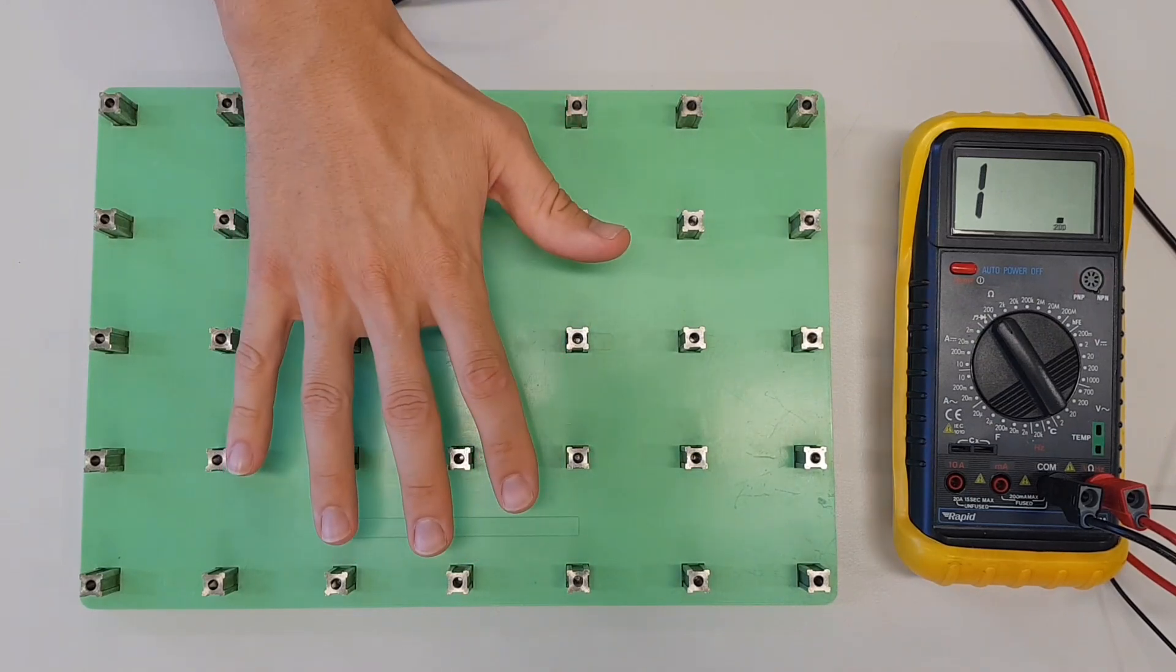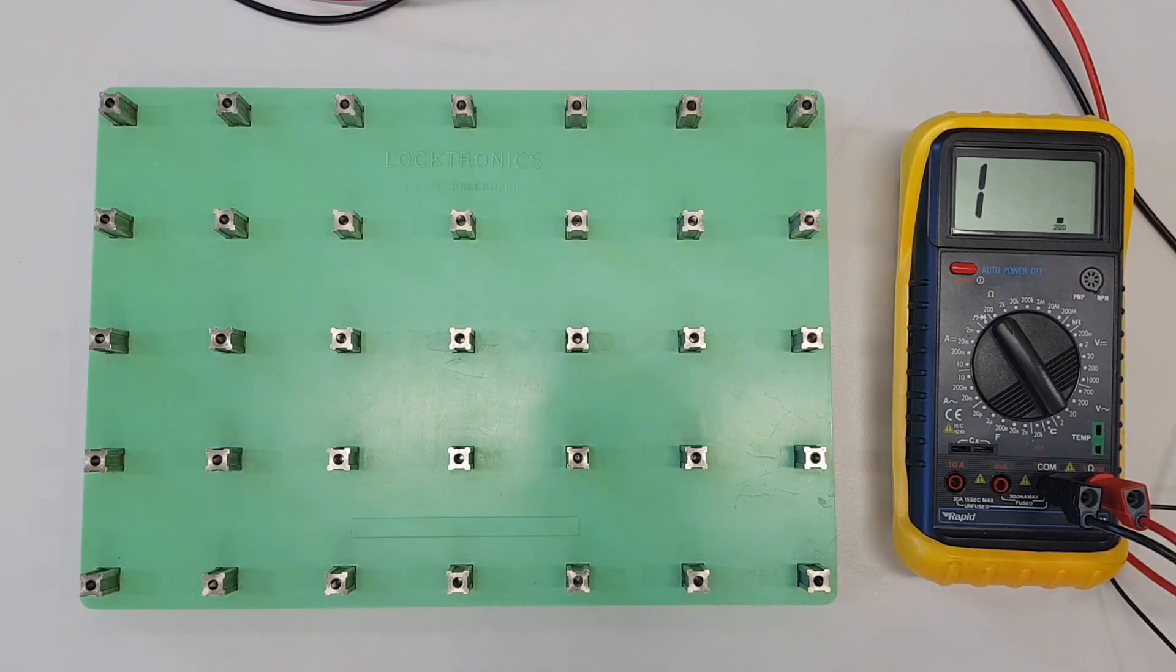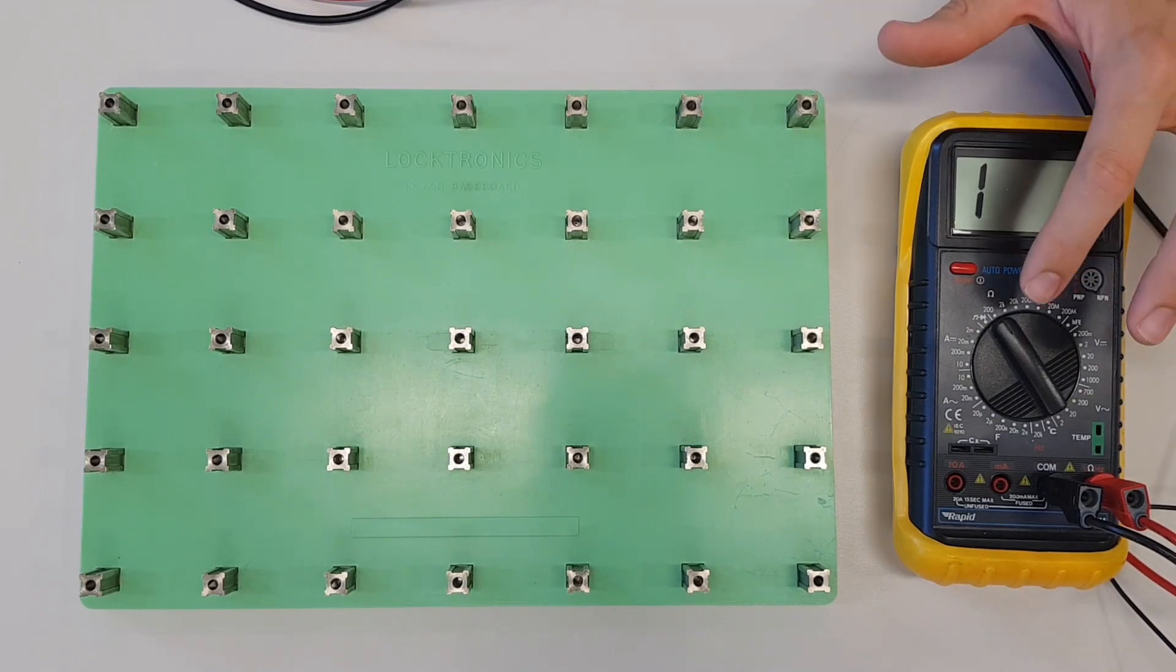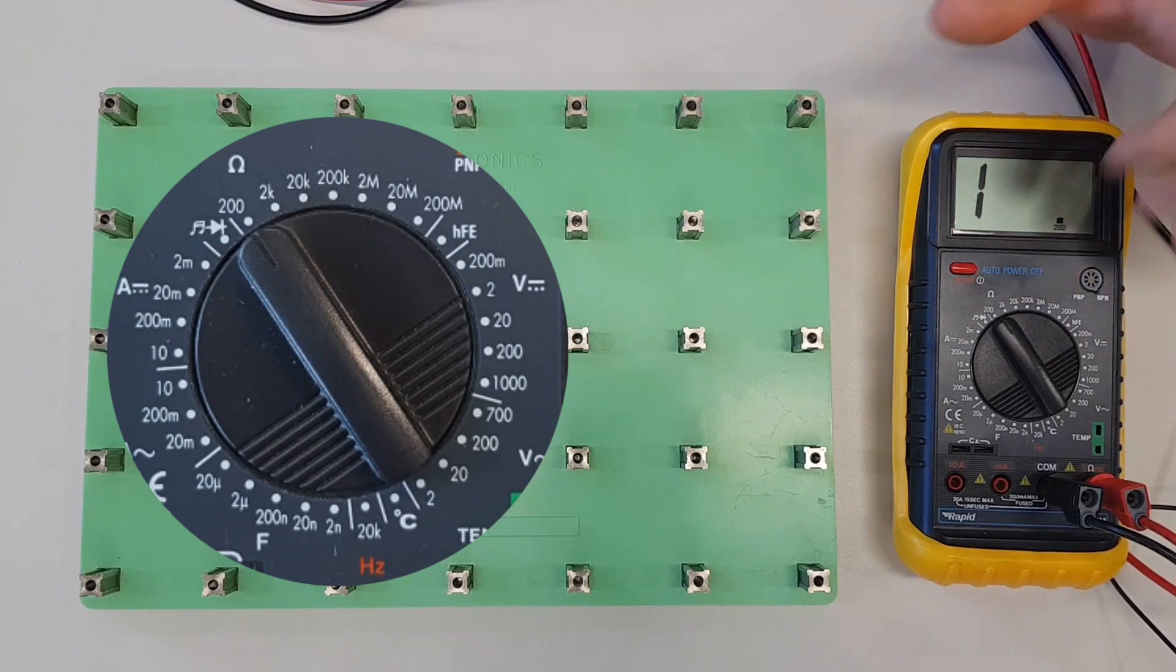We've got our electronics board ready to go with some resistors set up, and we've got our multimeter set to measure resistance. It's on the 200 ohm range, which means it's going to measure up to 200 ohms, which is plenty for what we're doing here today.